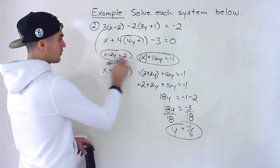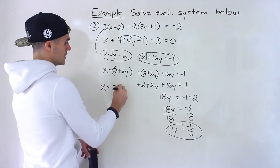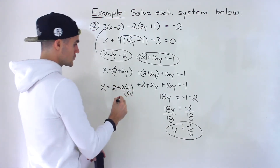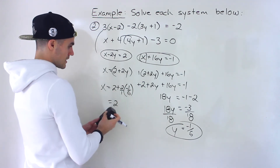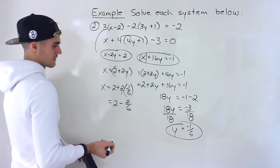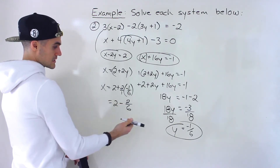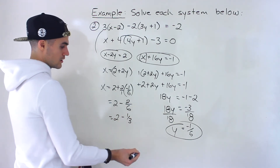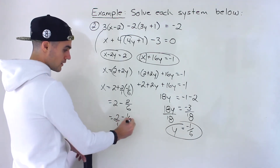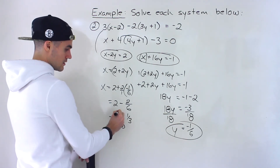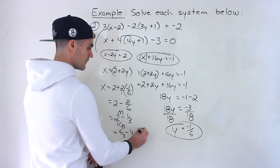To get the x value, we plug y equals negative 1/6 into x equals 2 plus 2y. So x equals 2 plus 2 times negative 1/6. That gives 2 minus 2/6, which simplifies to 2 minus 1/3. Converting 2 to 6/3 for a common denominator of 3: 6/3 minus 1/3 equals 5/3. So x equals 5 over 3.